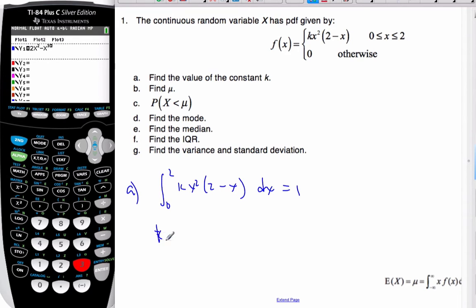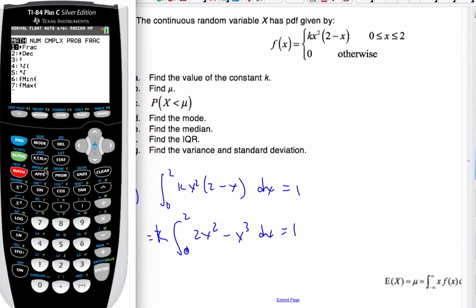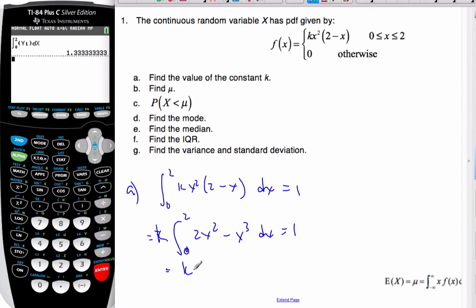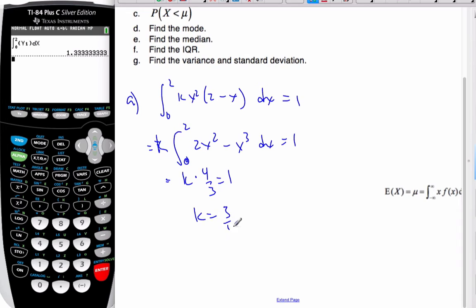So if I go k, and then from 0 to 2, 2x squared minus x cubed dx equals 1. Well, I'm going to use my calculator to do this one. y1 is given. And so I'm going to go math number 9 from 0 to 2, and I know it is in y1 dx. And so that's 4 thirds. This is equal to k times 4 thirds is equal to 1. And so k will then be 3 quarters.